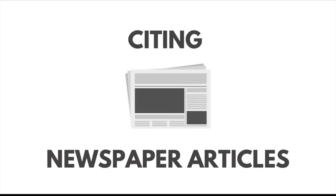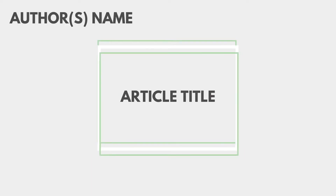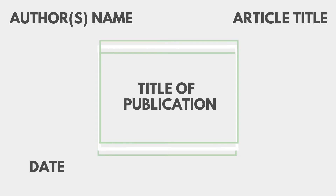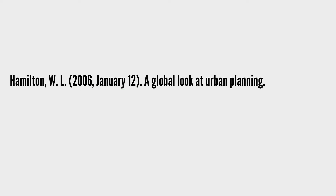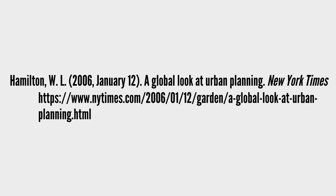Newspaper articles are cited quite similarly. For these, you will need the author's name, the title of the article, the date it was published, the title of the publication, which is the paper it's written for, and the URL. Once again, add the author's last name, followed by a comma, and their initials. Next, you should add the date in parentheses — it will follow the form year, month, date. Next, add the title of the article, after which you should add the title of the publication and italicize it. Finally, add the URL.